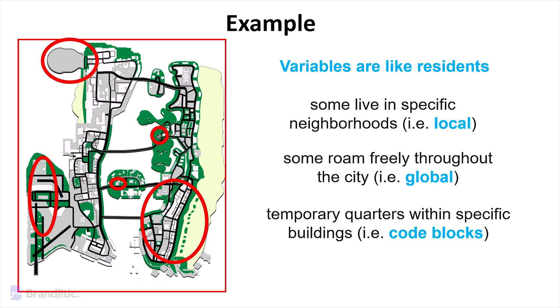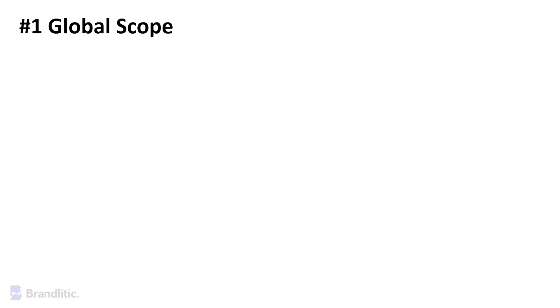Now let's break down each of these types of scopes in JavaScript. Starting with number one: Global Scope. In JavaScript, Global Scope is the widest scope available.